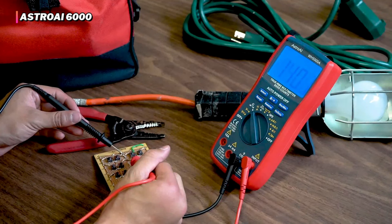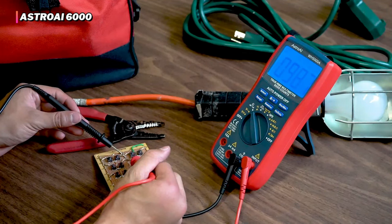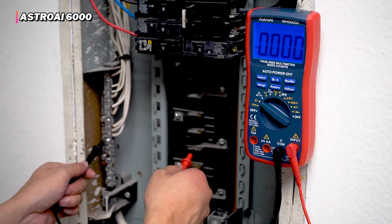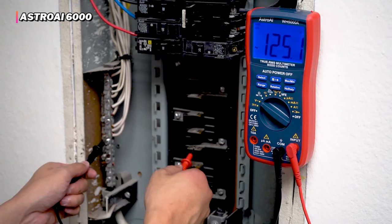However, there are some minor shortcomings to consider. For instance, the magnetic hanger is not incredibly strong, so you might unintentionally knock it off if you are using it to adhere the meter to a magnetic object.